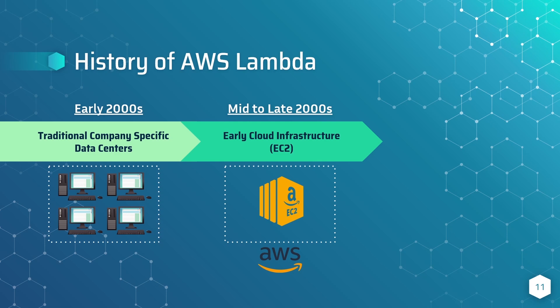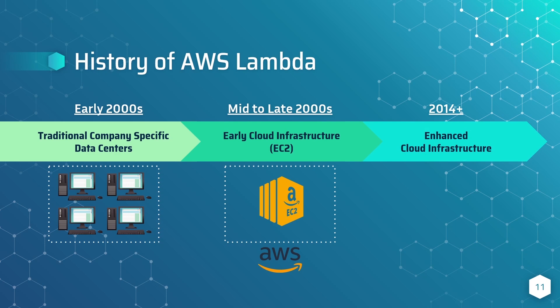AWS EC2 was extremely popular — even now it's the backbone service that many other services are built on. This led to the natural progression of computing, which is really the focus of this course: enhanced cloud infrastructure. In 2014, AWS Lambda was launched. The primary way Lambda is different from EC2 is that Lambda is still a compute service — it still lets us run and execute code — except the key difference is that with Lambda we pay per execution. We don't pay for physical hardware; we just pay for how many times we want to run our code.